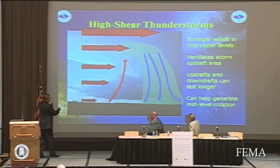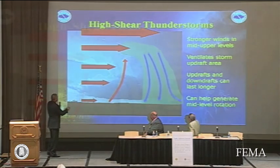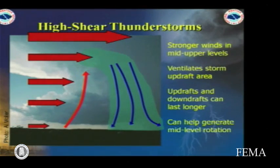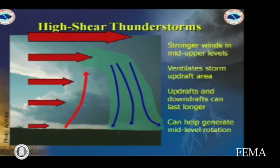The intense winds aloft did a couple of things. First of all, it's what we call wind shear, or the turning of the winds with height, and that created the spin, so we had storms that were rotating — mesocyclones — what we call the supercells.